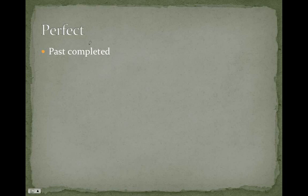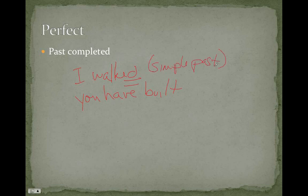Remember, the imperfect was incomplete, I was walking, and the perfect is, therefore, complete in the past tense. So, I walked, or you have built. We can either use sort of the simple past, we would call this in English, or this is the perfect, that is, a completed action in the past.